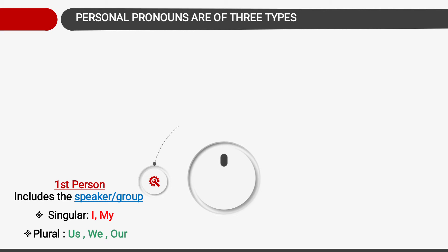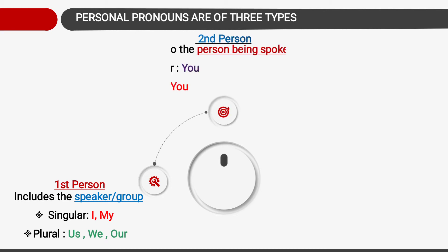Proceeding to second person. Second person refers to the person being spoken to. For singular we use 'you', and for plural we also use 'you'.